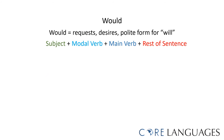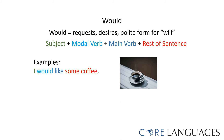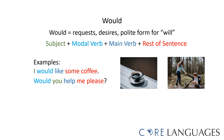The modal verb 'would' is used to express requests and desires, and it is the polite form of the auxiliary verb 'will'. For example, I would like some coffee. I could also say I want some coffee, but using the modal verb 'would' makes the sentence more polite. Would you help me please?